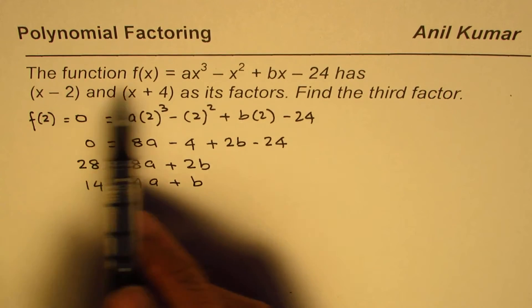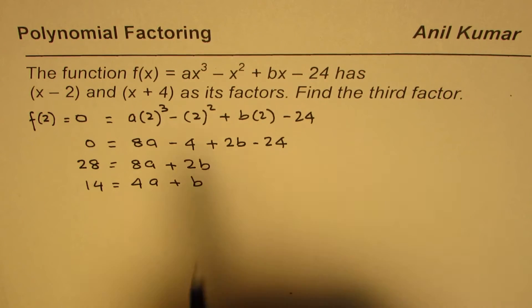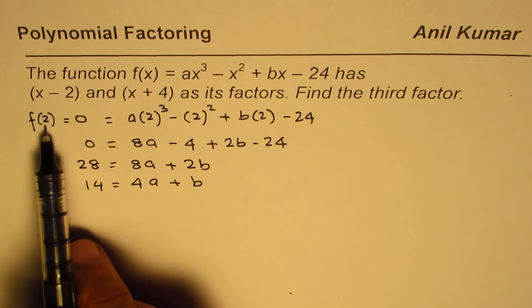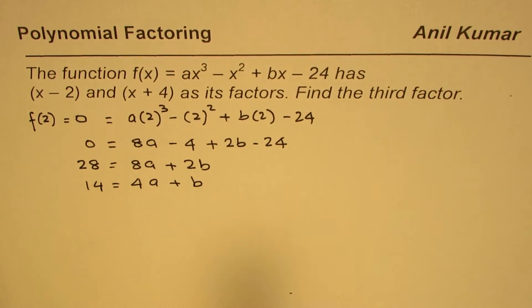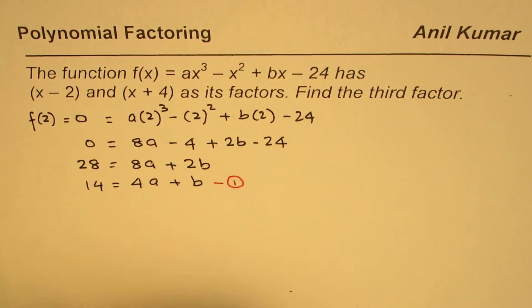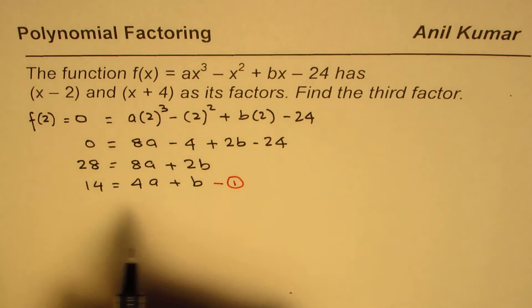Basically, we are given a polynomial cubic in two variables a and b. To find the third factor, we need to find the value of both a and b. When I substituted 2 in this equation, I got one equation in these two variables. Let me number this equation as 1. I will do the same thing with the second factor to get the second equation.